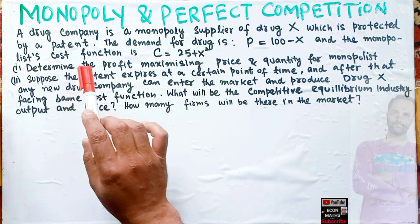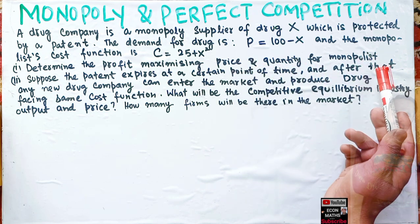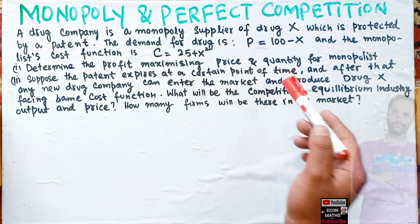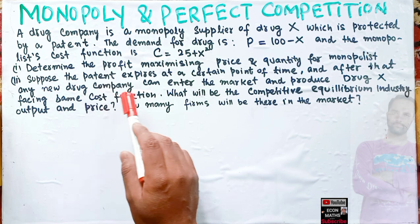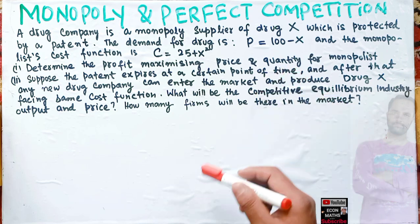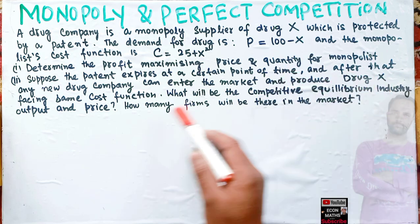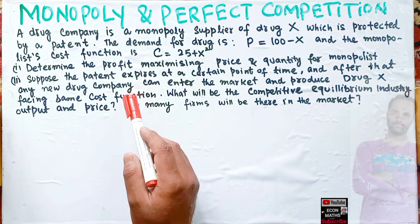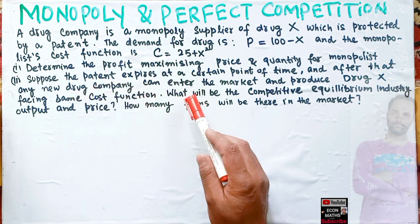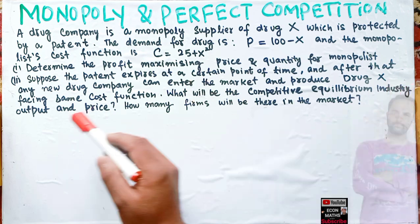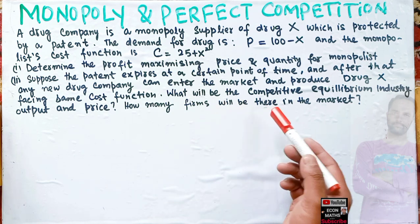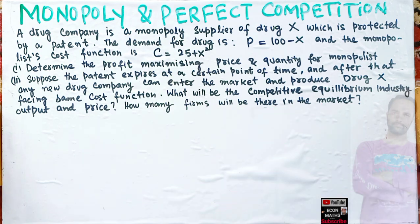We have to determine the profit-maximizing price and quantity for the monopolist. After that, suppose the patent expires, and any new drug company can enter the market, facing the same cost function. When there are no barriers to entry, we need to find the competitive equilibrium industry output, price, and the number of firms in the market.